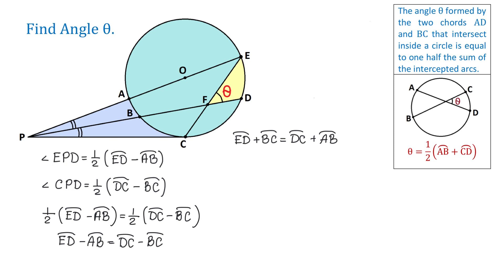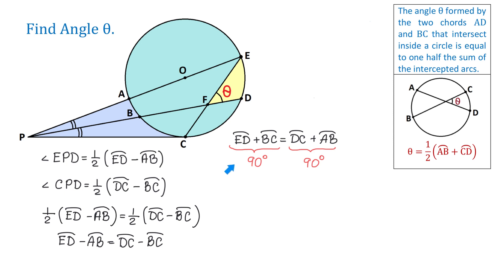So in the figure, ED plus BC is the same as AB plus CD. Now notice that if we add all four arcs together — AB plus BC plus CD plus DE — we get 180 degrees. So all these arcs together measure 180 degrees. In this equation, this means that each side equals 90 degrees. Recall that to find angle theta, we need to add arcs BC and ED and divide the result by 2. From this equation, we see that the sum of these two arcs is 90 degrees.